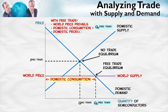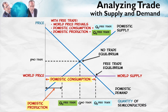So domestic production will fall to this lower amount. At a lower price, the domestic suppliers are only willing to produce a lower amount, as given by QS free trade. Notice that domestic consumption is QD free trade, domestic production is QS free trade, and demanders are demanding more than the domestic suppliers are willing to supply.